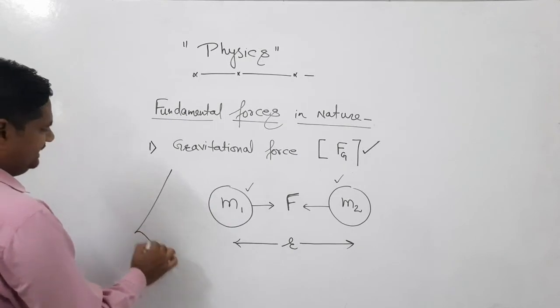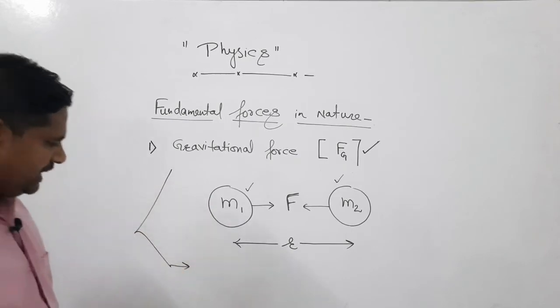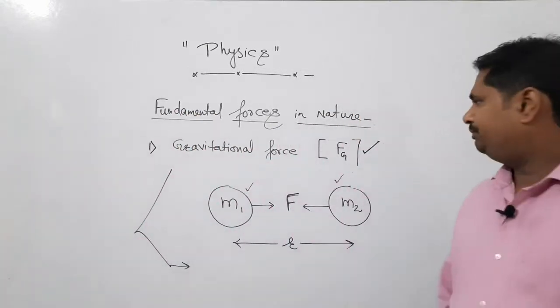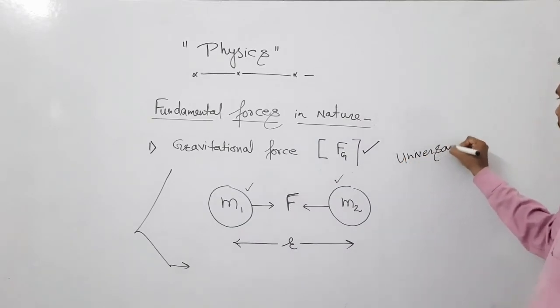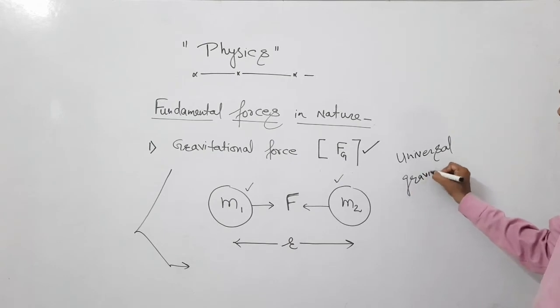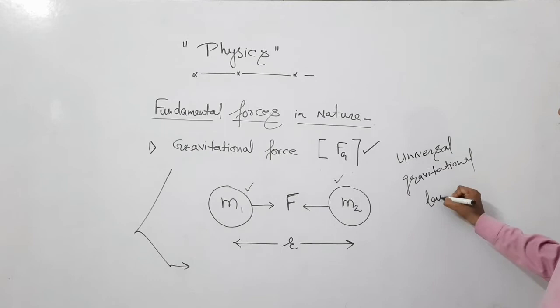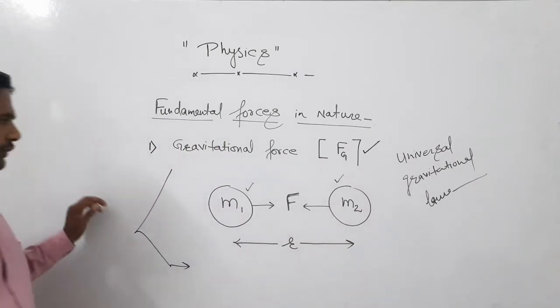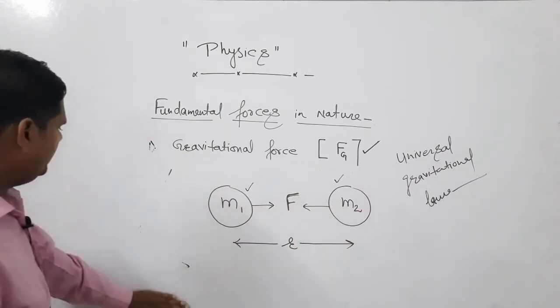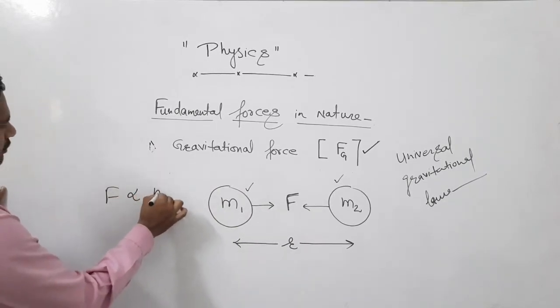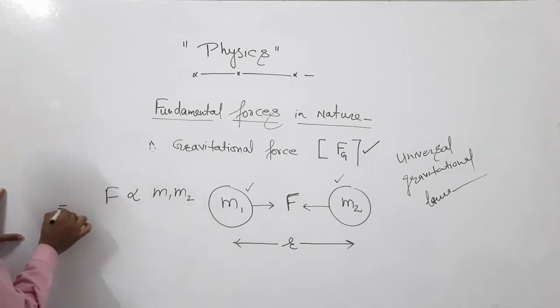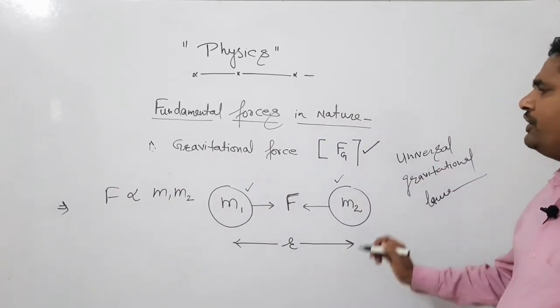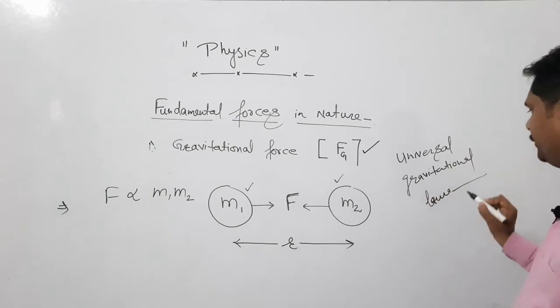Now the definition is very simple. Gravitational force is a force of attraction between two bodies due to their masses. Now the scientist was Isaac Newton. He said that I have one law. Which law? Universal gravitational law. The name of law is universal gravitational law. Then according to this law, according to Newton's universal gravitational law: